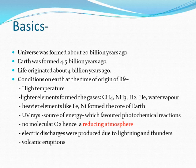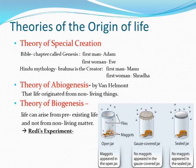Let us now start with the actual theories given by different scientists on the origin of life. The first one is the theory of special creation. This theory was based on religious beliefs — it was believed that God created life in heaven and those living forms were then placed on earth. Let us take a couple of examples to understand this theory.